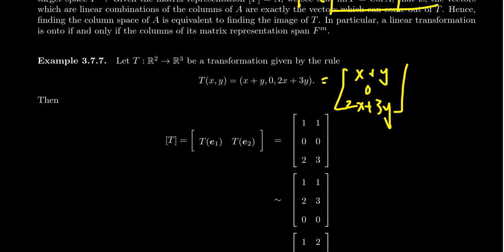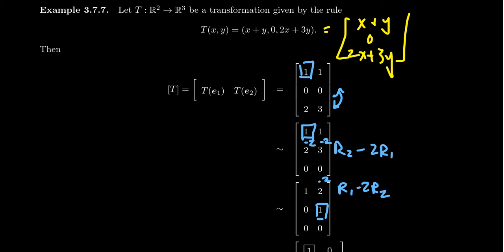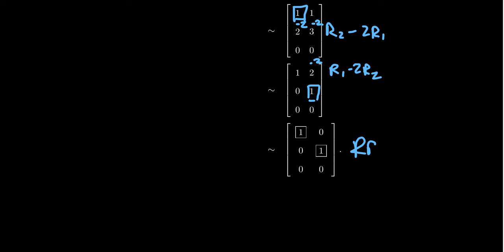Let's row reduce this matrix to echelon form to see where the pivots are. We have a pivot in the (1,1) position. We move the zero row to the bottom. To eliminate the 2, we take row 2 minus 2 times row 1, giving us (−2, −2), which yields a 0 and 1 in the next row. To get reduced row echelon form, we take row 1 minus 2 times row 2. Now we can see the row reduced echelon form. There is a pivot in every single column — a pivot in the first column and a pivot in the second column — so the rank of the matrix A equals 2.